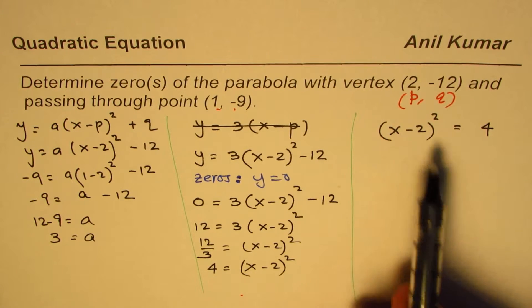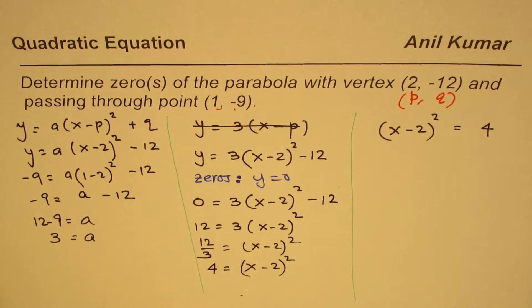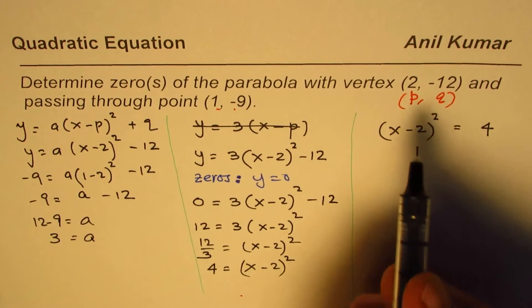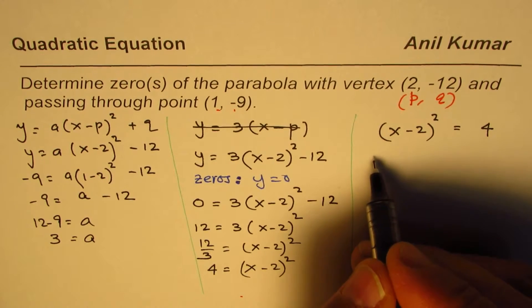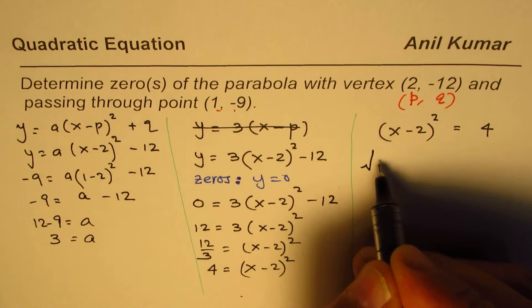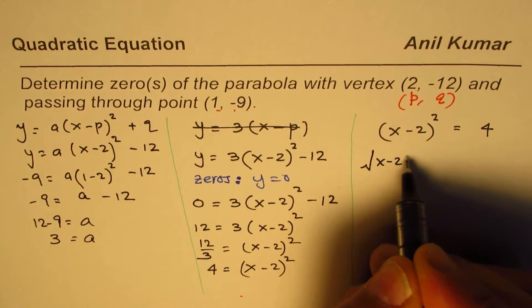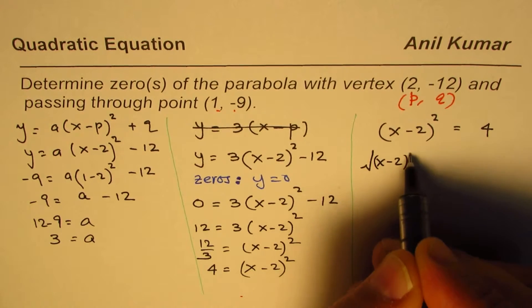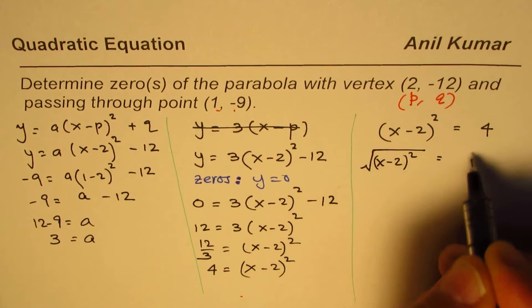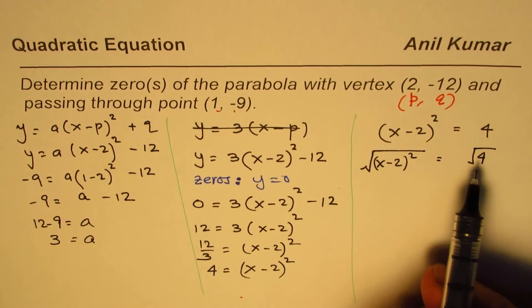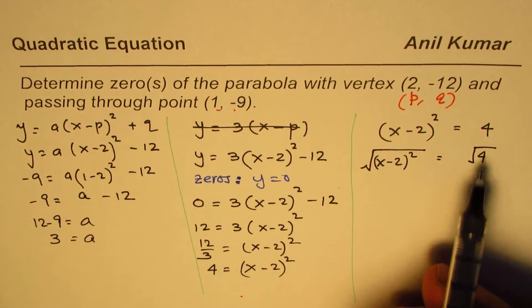Now from here we have to get the solution of x. I've seen students make a mistake even at this stage, so look very carefully. To solve, we have to take the square root of both sides. We're taking the square root of (x - 2)² and the square root of 4.